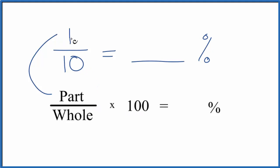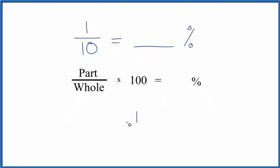When we take the part over the whole, we divide 1 by 10, we're getting a decimal for the fraction. So let's say we have 1, and we want to know how many times 10 goes into 1.